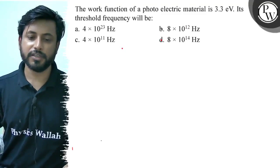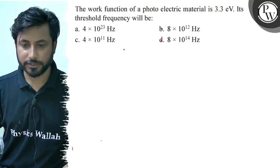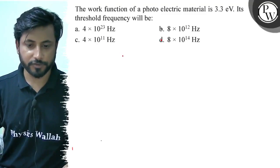Hello, the question says that the work function of a photoelectric material is 3.3 electron volts. Its threshold frequency will be: